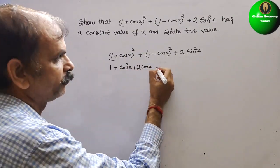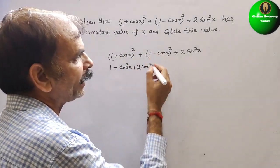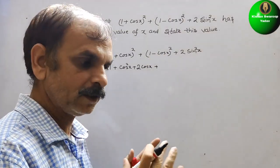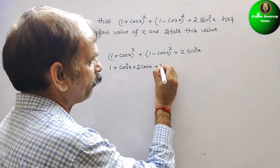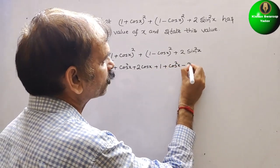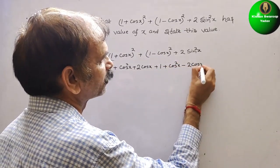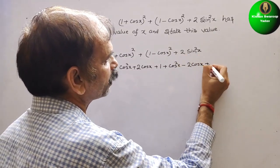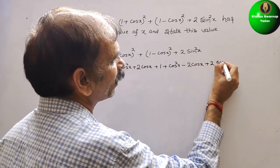Here comes plus, next we have to write (a-b)² just expand it. It will be 1 + cos²x - 2cos x. Next is your plus 2sin²x.